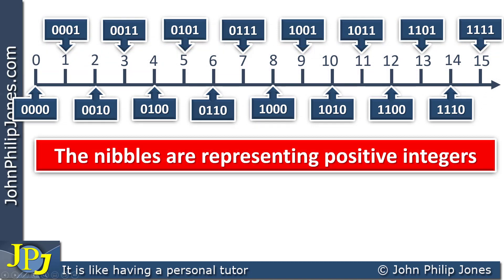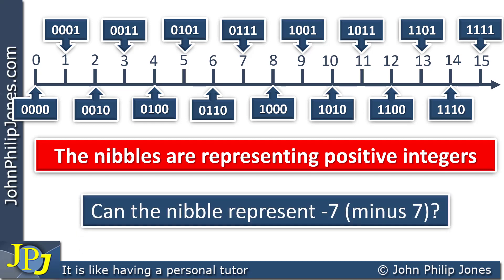These nibbles are representing positive integers from 0 to 15. They don't represent any fractional bits, but something else they do not represent — they do not represent negative numbers. So can the nibble represent minus 7? Not in the way we're looking at them here, but it is possible to represent negative values using binary, and that's really what this video is about: signed magnitude and how we can use it to represent negative numbers within a computer system.